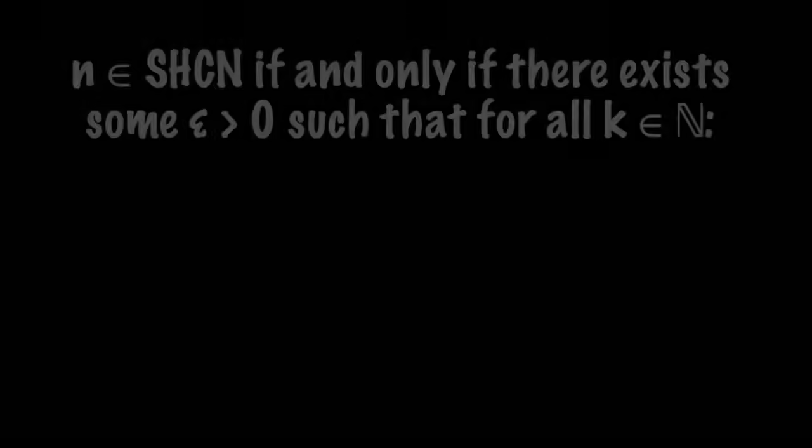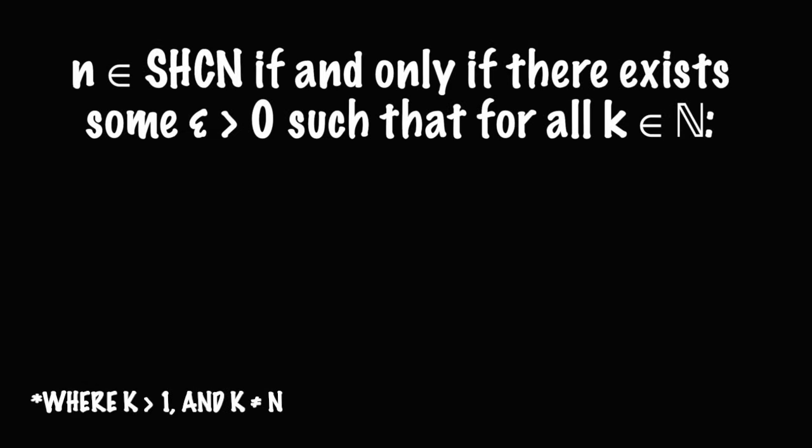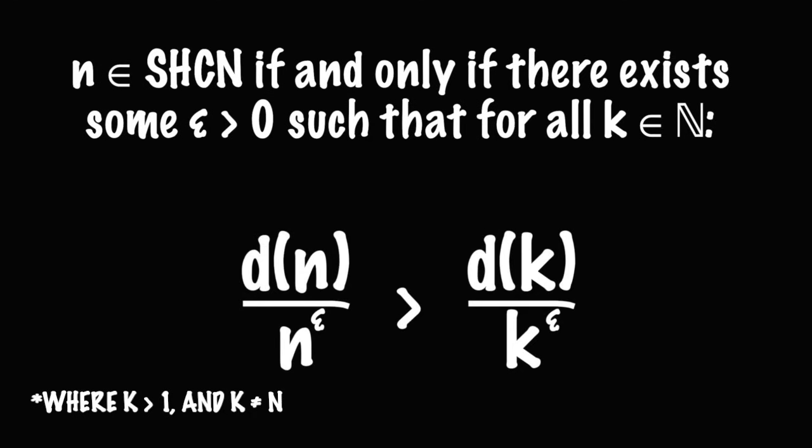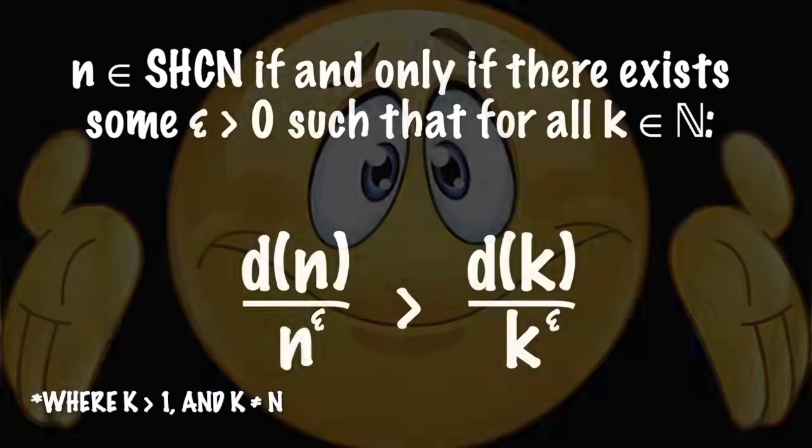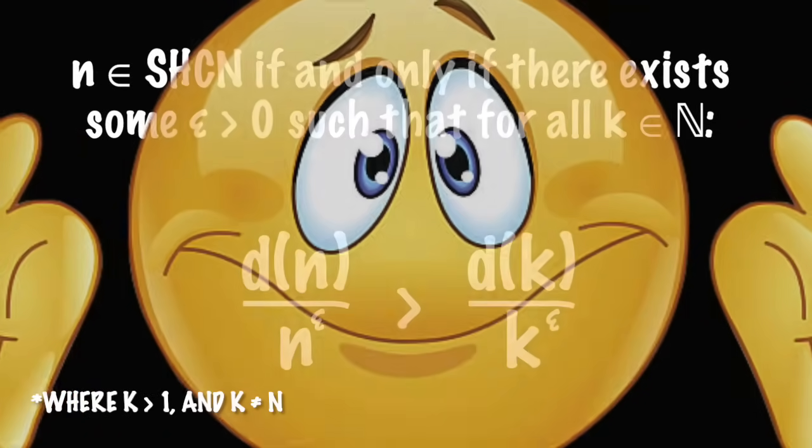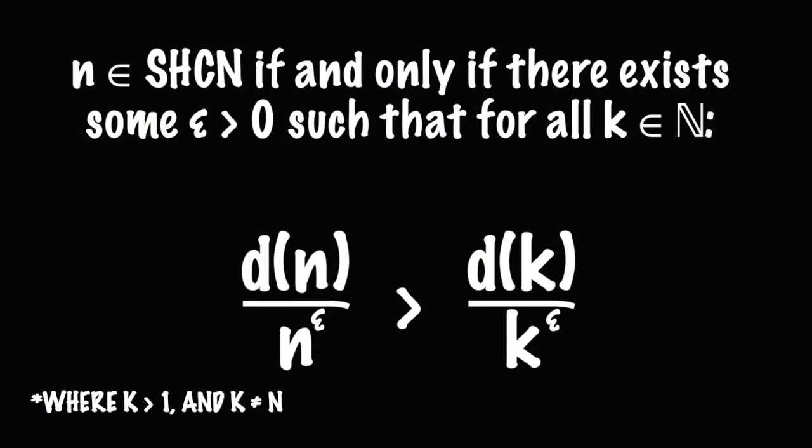More specifically, a given number n is an element of the superior highly composite numbers if, and only if, there exists some epsilon greater than zero such that for all other natural numbers, d(n) over n to the epsilon is greater than d(k) over k to the epsilon. Now, I know that was a mouthful. Trust me, I'm the one that just had to read it all. But it's not as bad as it sounds.